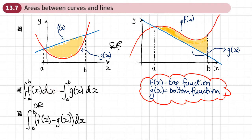The other way is to algebraically subtract the functions first — the one at the top minus the one at the bottom — then integrate. So here we integrate then subtract, whereas here we subtract then integrate. I personally prefer this second method because it means slightly less working, but either way is fine: integrate then subtract, or subtract the top function minus the bottom function then integrate.